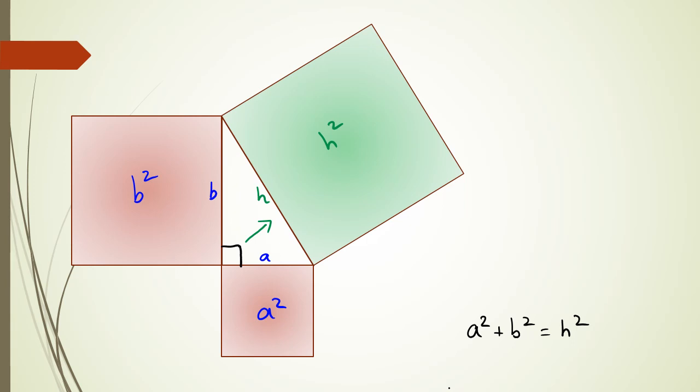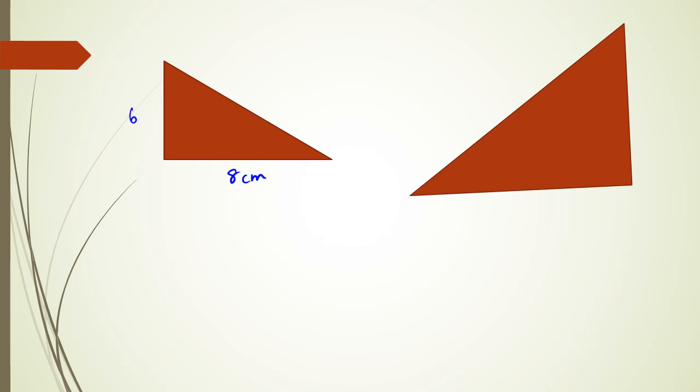Let's do a couple of problems. In this question we have a triangle where one side is 8 centimeters and the other is 6 centimeters, and we're asked to find the hypotenuse. Using the formula a squared plus b squared equals h squared, we get 6 squared plus 8 squared equals h squared. 6 squared plus 8 squared is 100, so h squared equals 100.